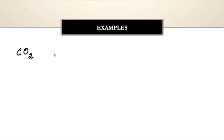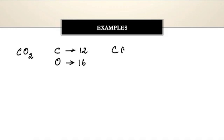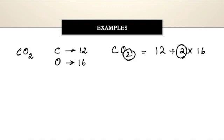The atomic mass of carbon is 12 and the atomic mass of oxygen is 16. So the molecular mass of CO2 would be 12 plus 2 × 16. We multiply by 2 because there are 2 atoms of oxygen.